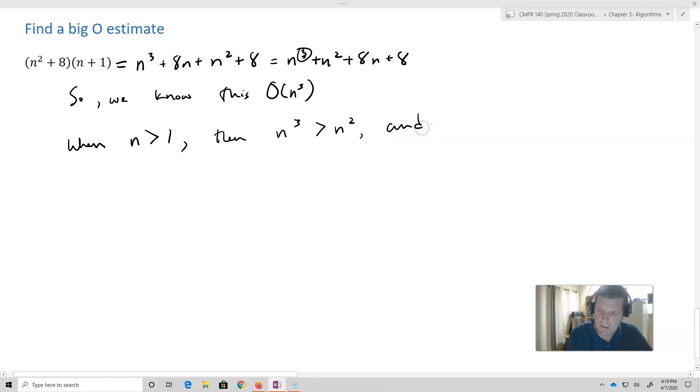And in addition to that, n³ will be greater than n, because this is linear and this guy is cubed. So once we pass 1, skyrocketing upward. And n³ is greater than 1.